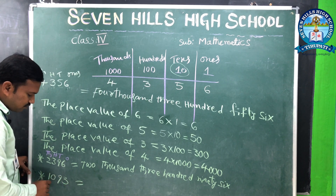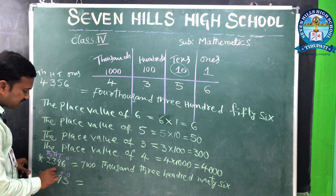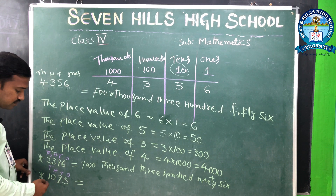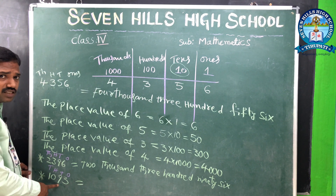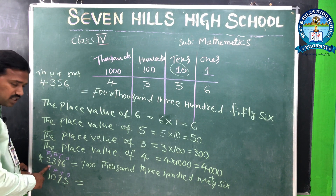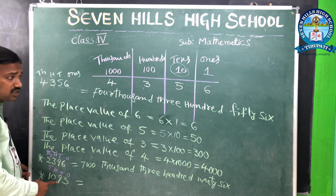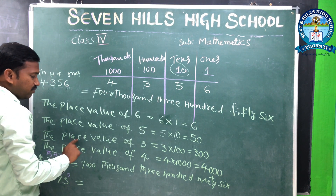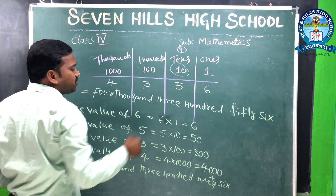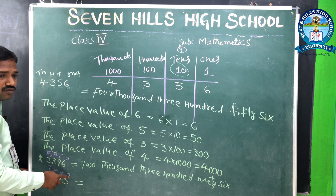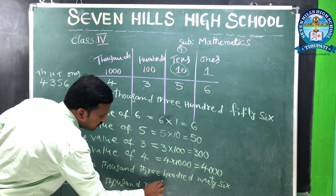Here the number is 1093. 3 is in the ones place, 9 is in the tens place, 0 is in the hundreds place, and 1 is in the thousands place. Since 0 is in the hundreds place, we do not read that. 1000, then 9 tens = 90, then 3. So the number is read as 1093.